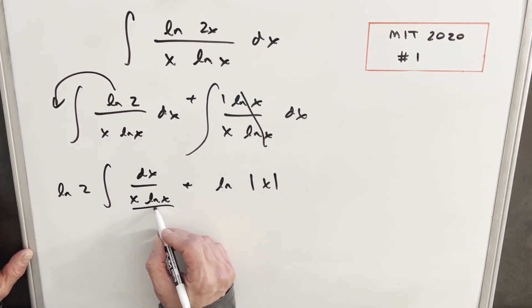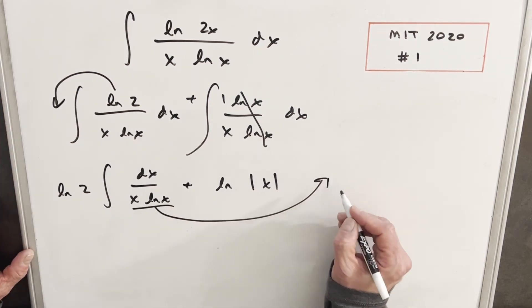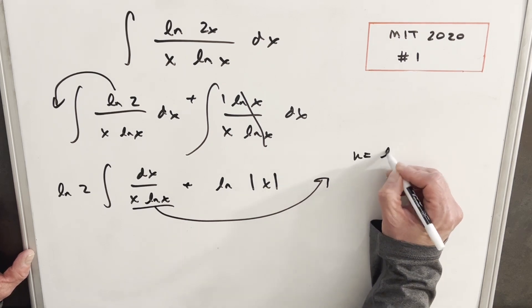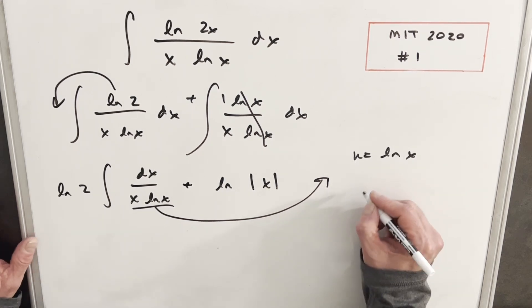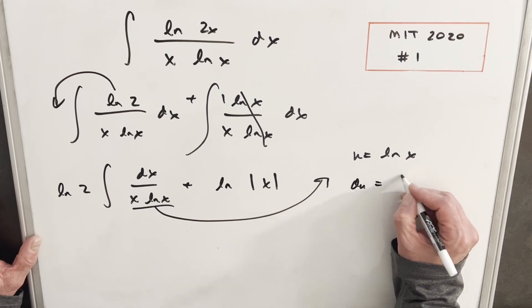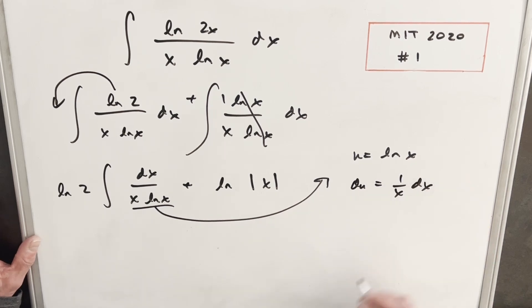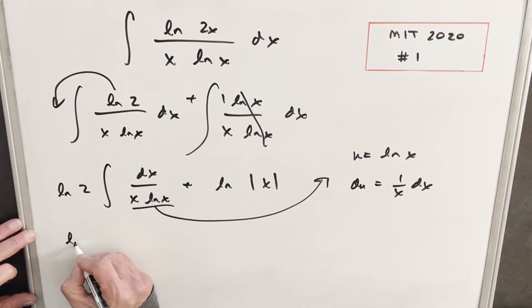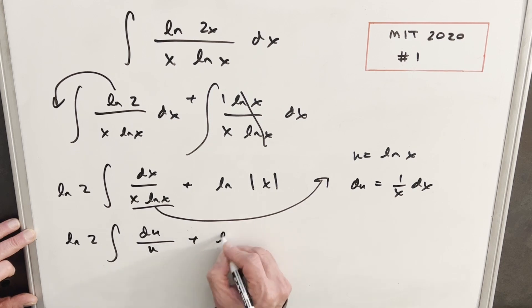And focusing on this one, we'll just do a quick u substitution over here. So we'll call u equals ln x. Then our du is going to be 1 over x dx. So then making the substitution, we're going to have natural log of 2, and then we'll have our du over u, which is our ln x, plus we'll keep this natural log x.